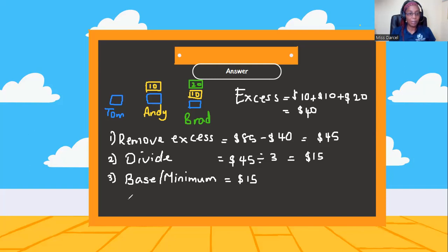So now we could allocate the funds to each person. So Tom, he gets the minimum, so that's $15. Andy gets the minimum plus $15. So Andy will get $25. 15 plus $10 is $25. And Brad will get the minimum, plus Andy's amount, plus his $20. So 10 plus 20, plus 15, will give us $45. So that's what each person gets.